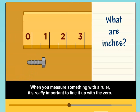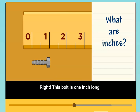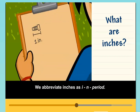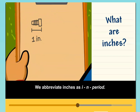When you measure something with a ruler, it's really important to line it up with the zero. Right, this bolt is one inch long. We abbreviate inches as IN period.